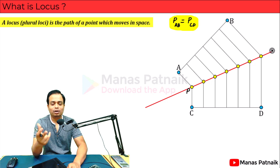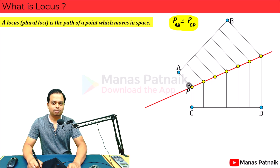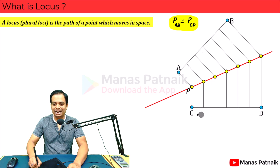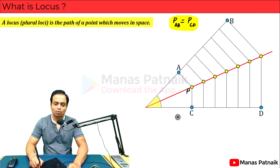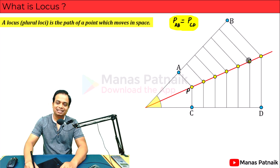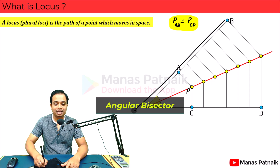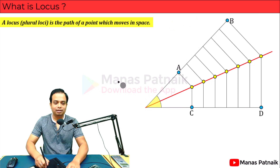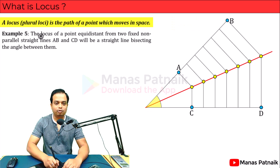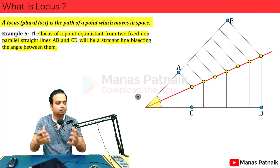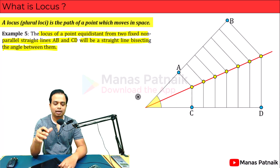What is so special about this locus line? If you extend lines BA and DC backward, you realize there is an angle formed between them. The red line — the locus — is also the angular bisector of the angle between line AB and line CD. Formally: the locus of a point equidistant from two fixed non-parallel straight lines AB and CD is a straight line bisecting the angle between AB and CD.